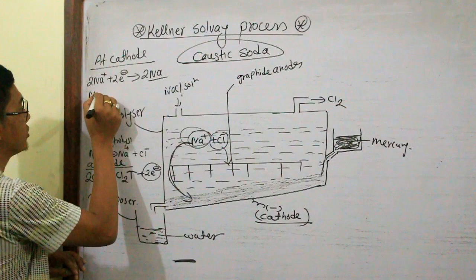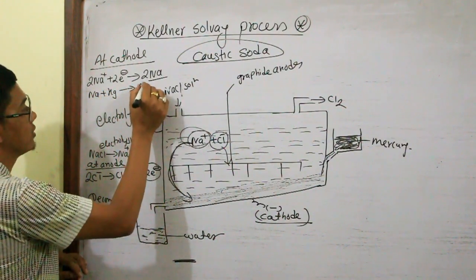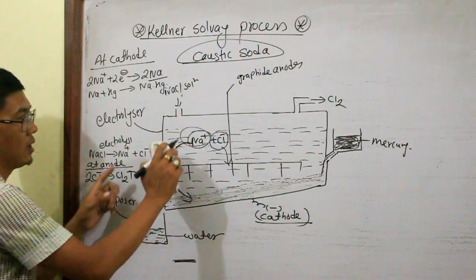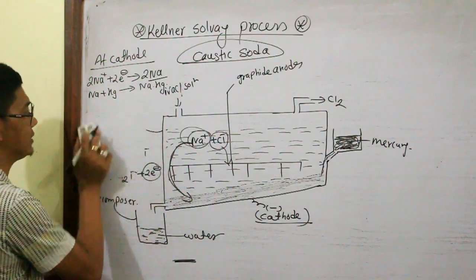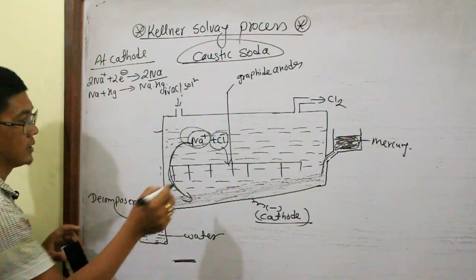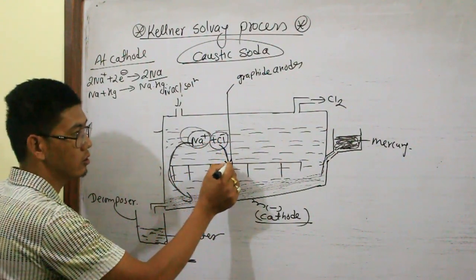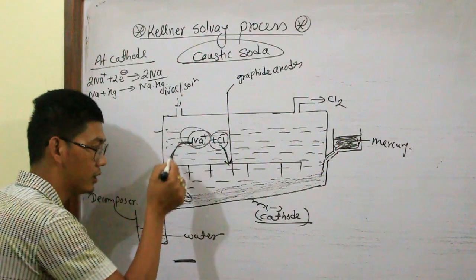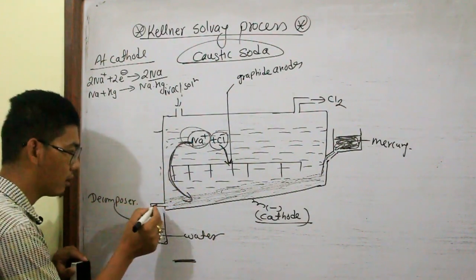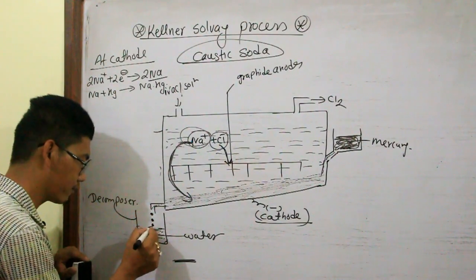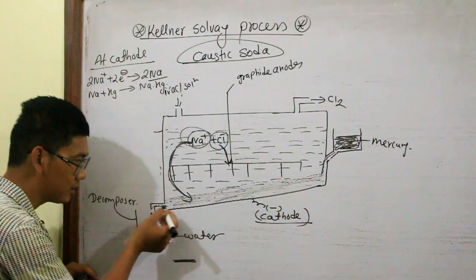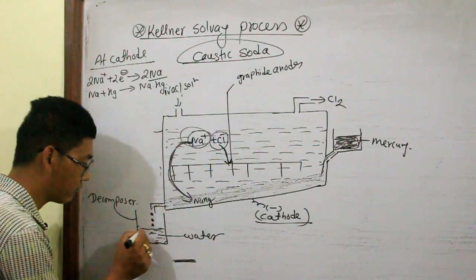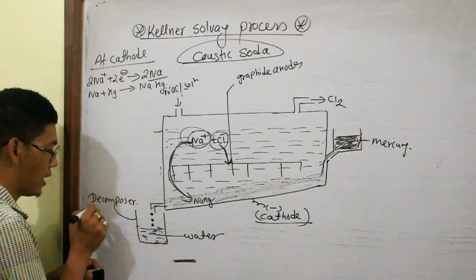Sodium metal combines with mercury at the cathode and finally gives sodium amalgam. The principle is the same. Now looking at the apparatus setup — Cl- goes to the anode, loses electrons, chlorine gas escapes. Na+ moves towards cathode, mercury gives sodium metal, combines with mercury and gives sodium amalgam. Finally, sodium amalgam drops into water.